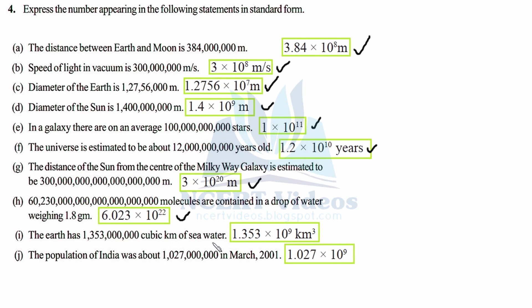Part (i): the Earth has a certain volume of seawater in cubic kilometers. Cubic kilometer refers to volume — cubic means raised to power 3, it is three-dimensional. Significant digits are 1, 3, 5, 3, 4 — write 1.3534. Count all digits: 3, 6, 9, 10 — that is 10 digits, and 10 minus 1 is 9. So the answer is 1.353 × 10⁹ cubic kilometers.